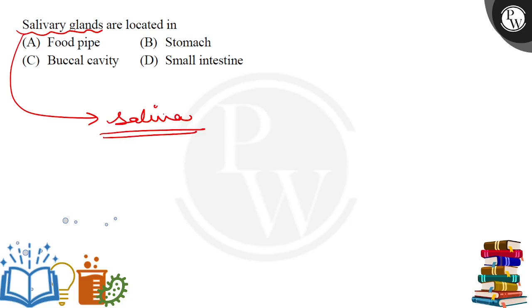Where does saliva get produced? In our mouth. And what do we call the mouth? The buccal cavity. So the correct answer is option C.